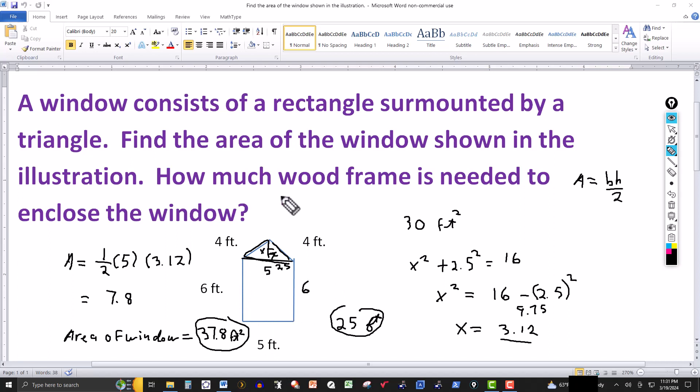So how much wood frame is needed to enclose the window? 25 feet. So the area of the window is 37.8 square feet. And the amount of wood needed to enclose the window is 25 feet. Thanks for watching. We'll see you next time.